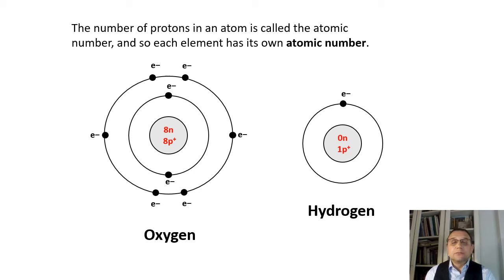What is the atomic number of hydrogen? One. Look at hydrogen — that is the simplest atom known. It consists of only one proton and one electron. There are no neutrons.